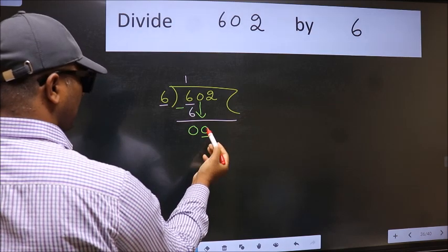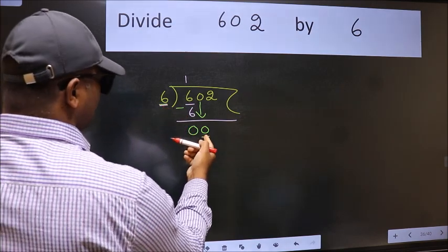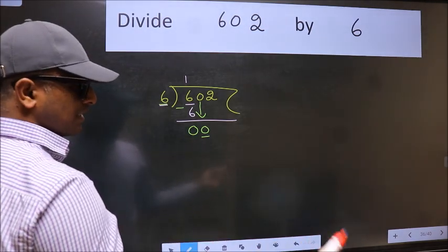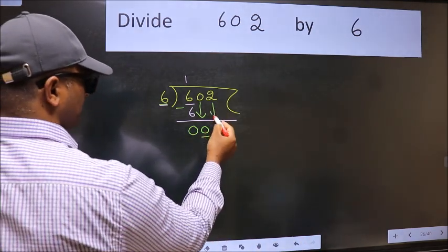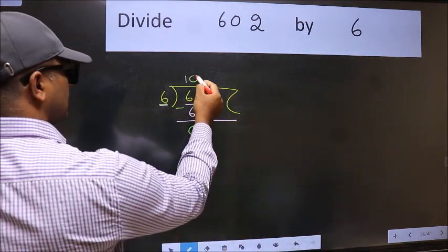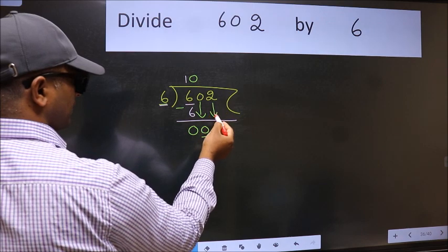Now here we have 0 and here 6. 0 is smaller than 6. So we should bring down the second number. And the rule to bring down second number is put 0 here. Then only we can bring this number down.